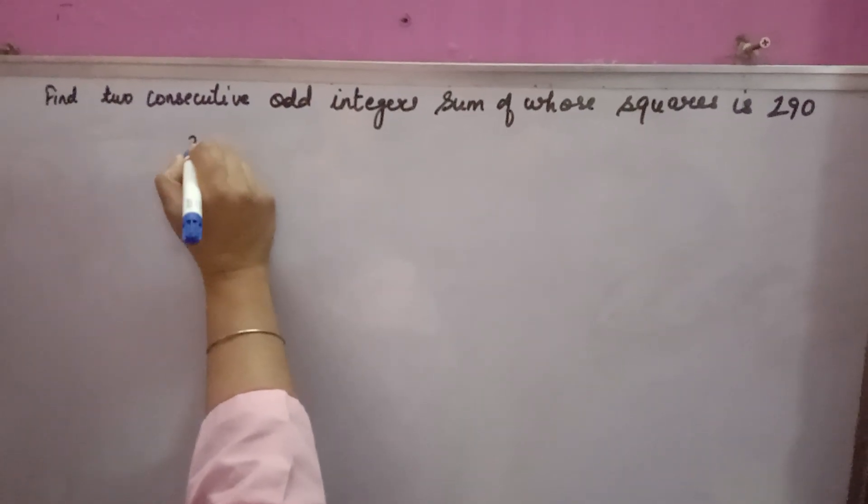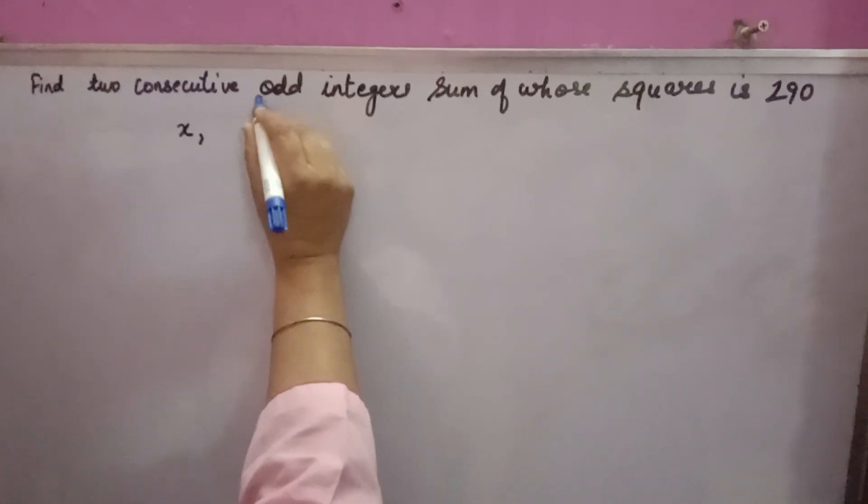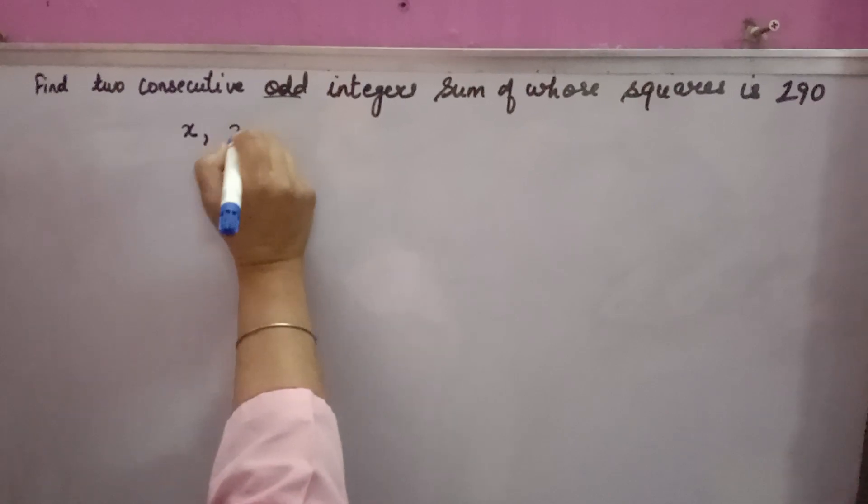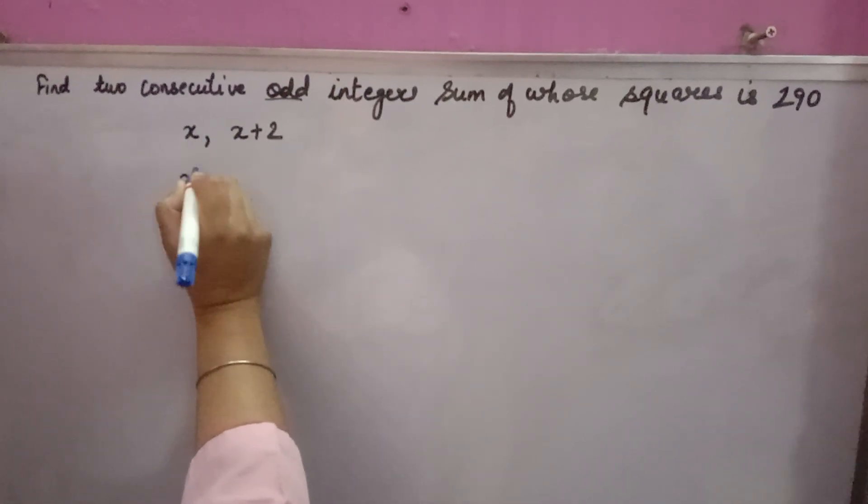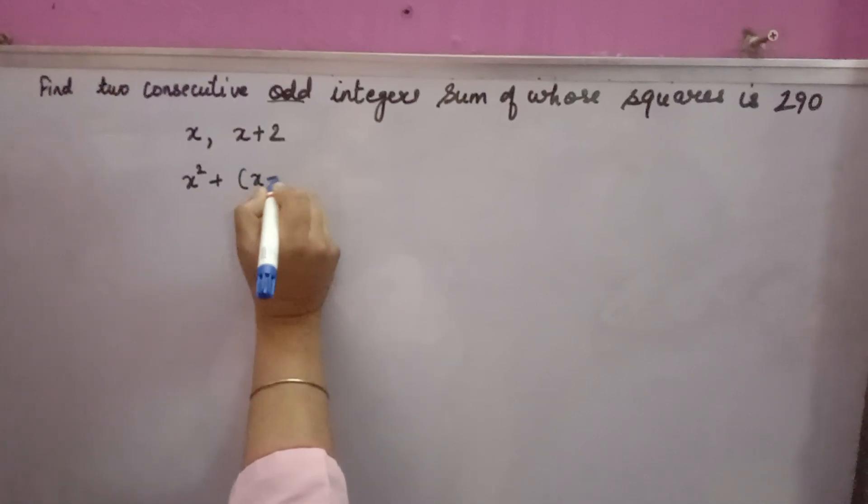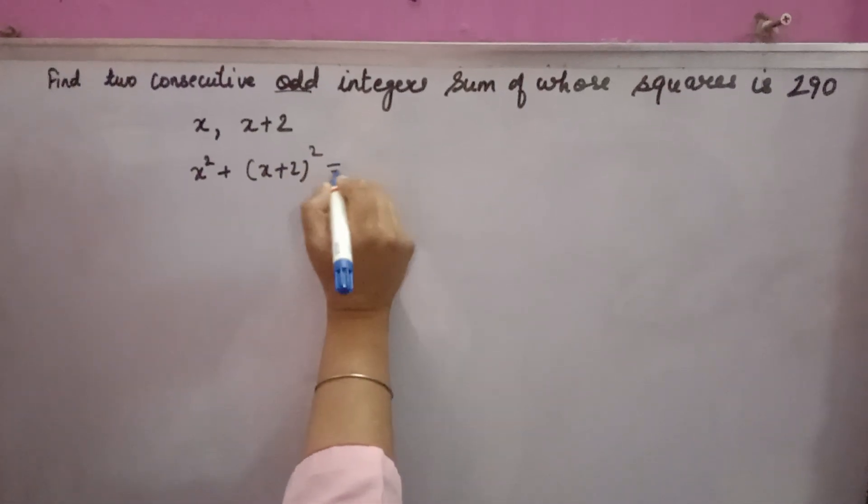The square sum is 290. Let one number be x for consecutive odd or even integers. Next, you take x plus 2. Now the square sum means x squared plus (x + 2) whole squared equals 290.